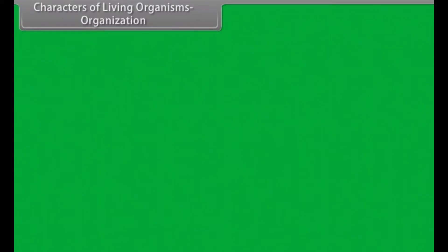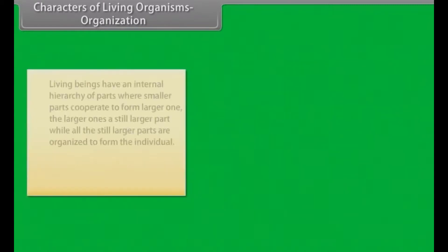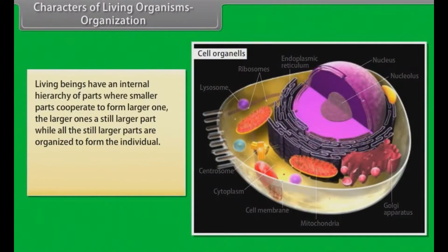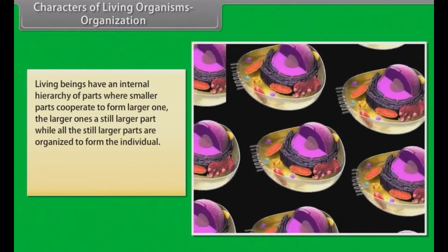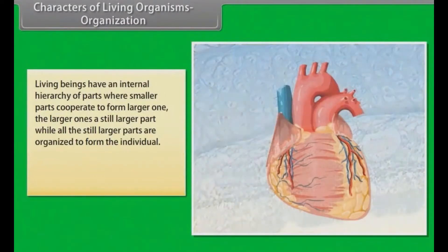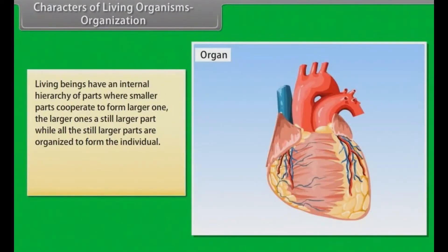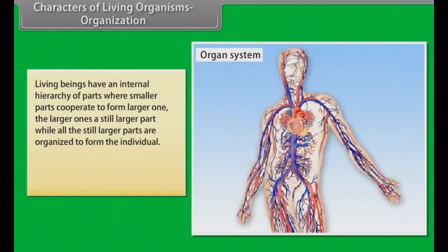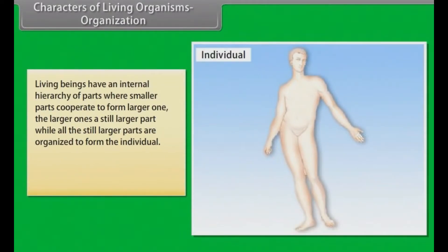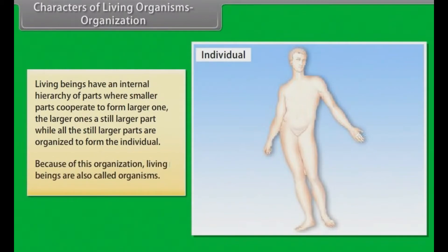Living beings have an internal hierarchy of parts where smaller parts cooperate to form larger ones. The larger ones in turn form a still larger part, while all the parts are organized to form the individual. Because of this organization, living beings are also called organisms.